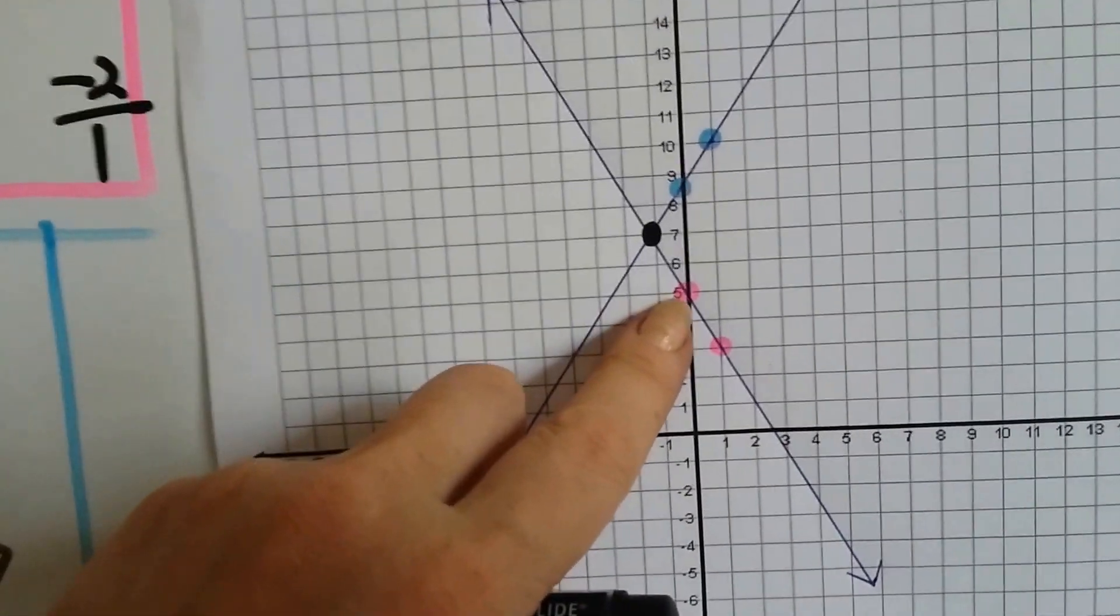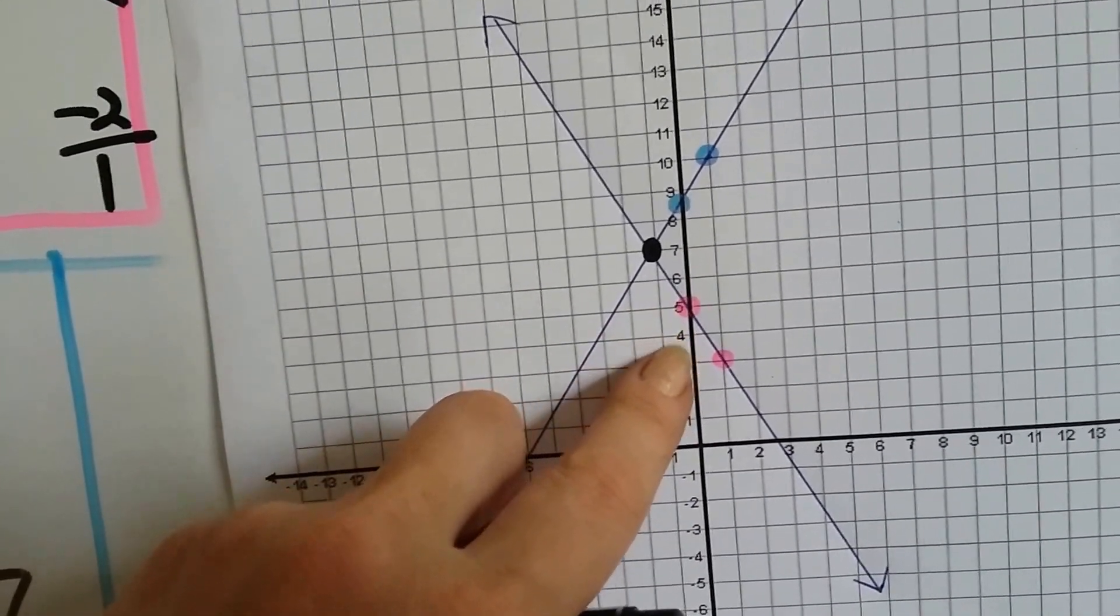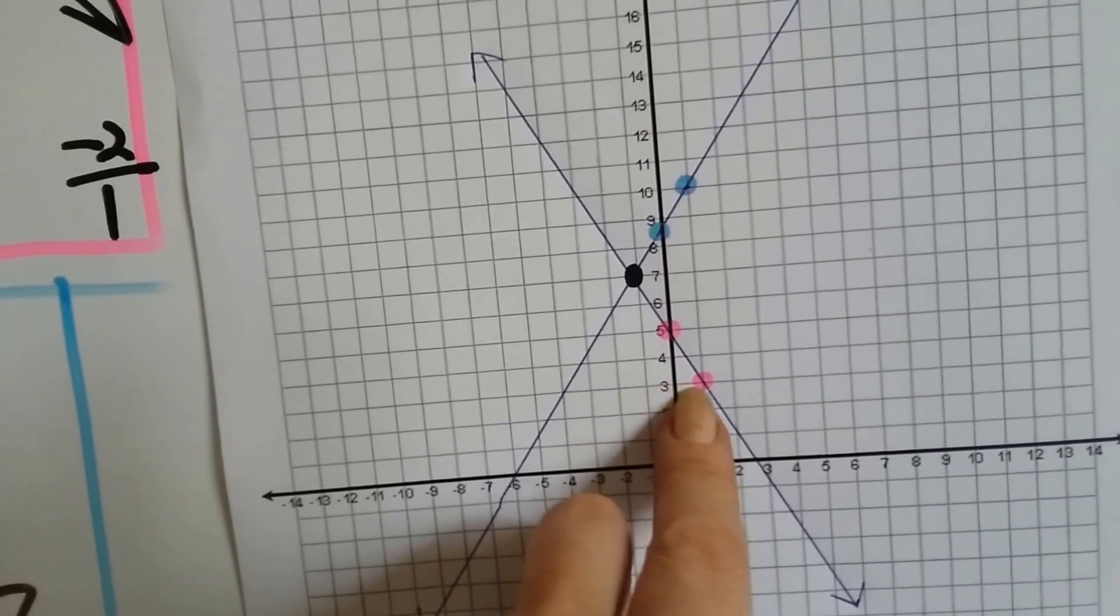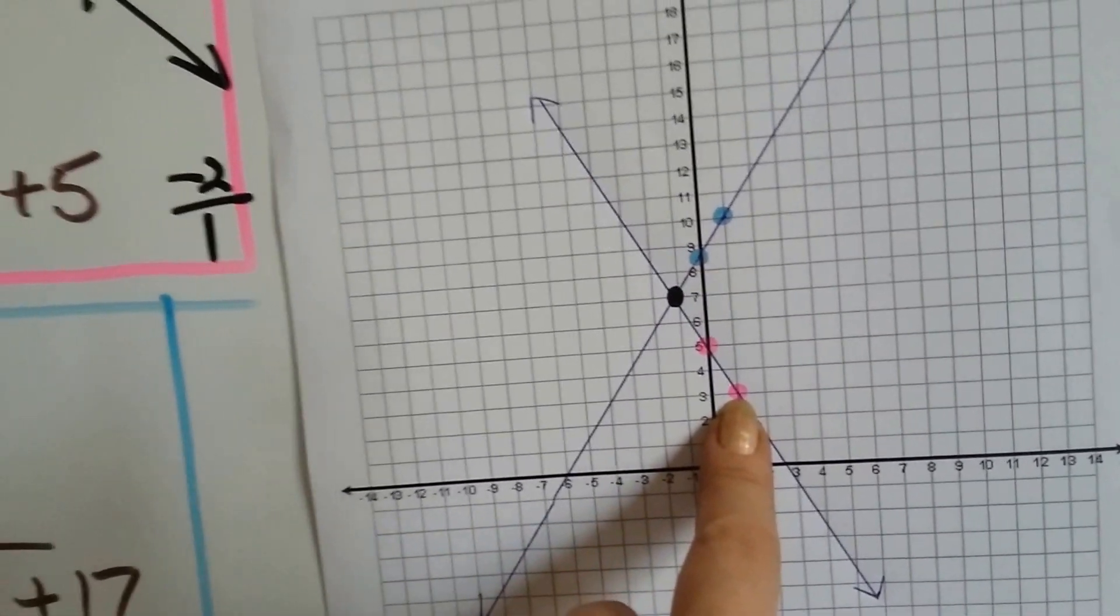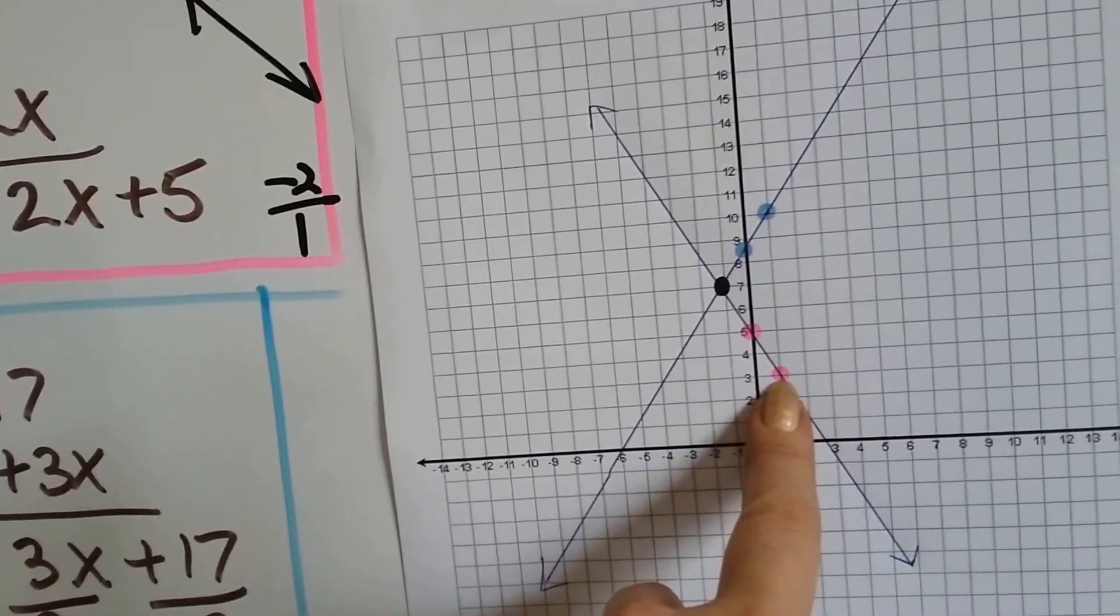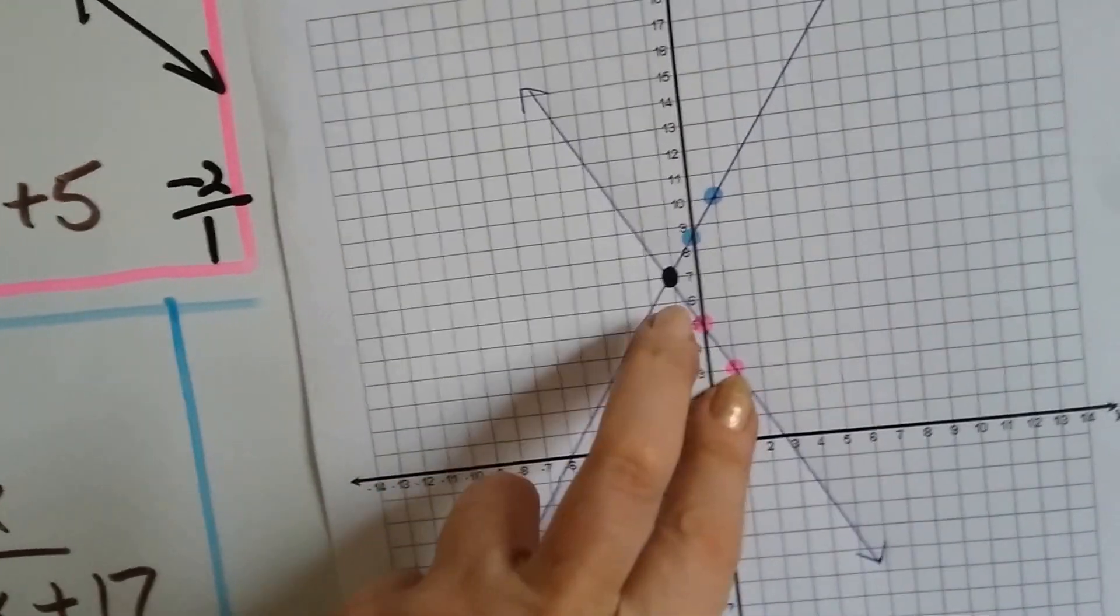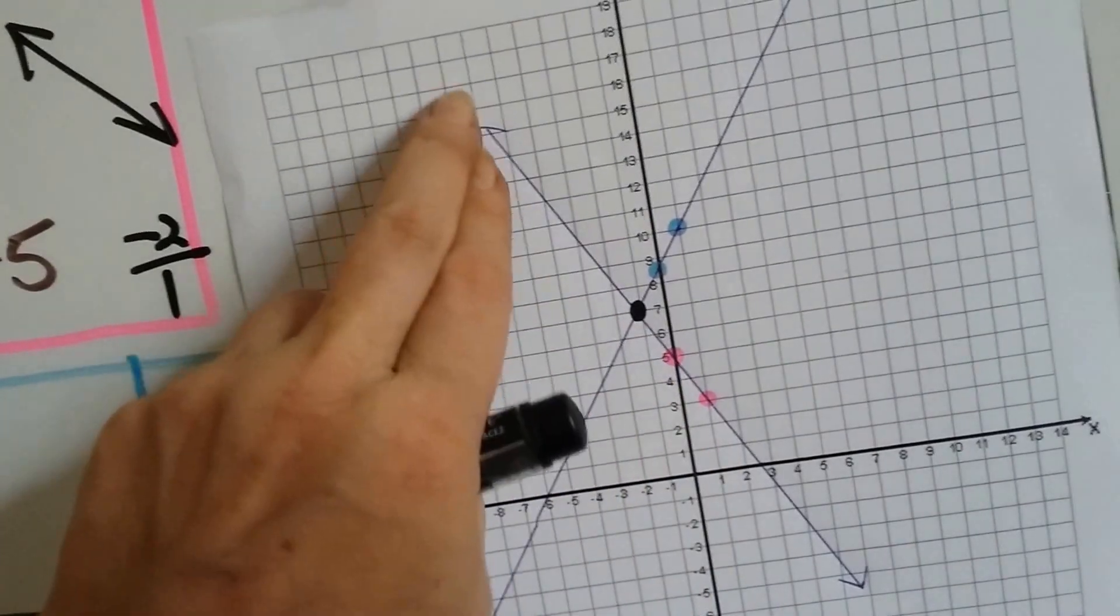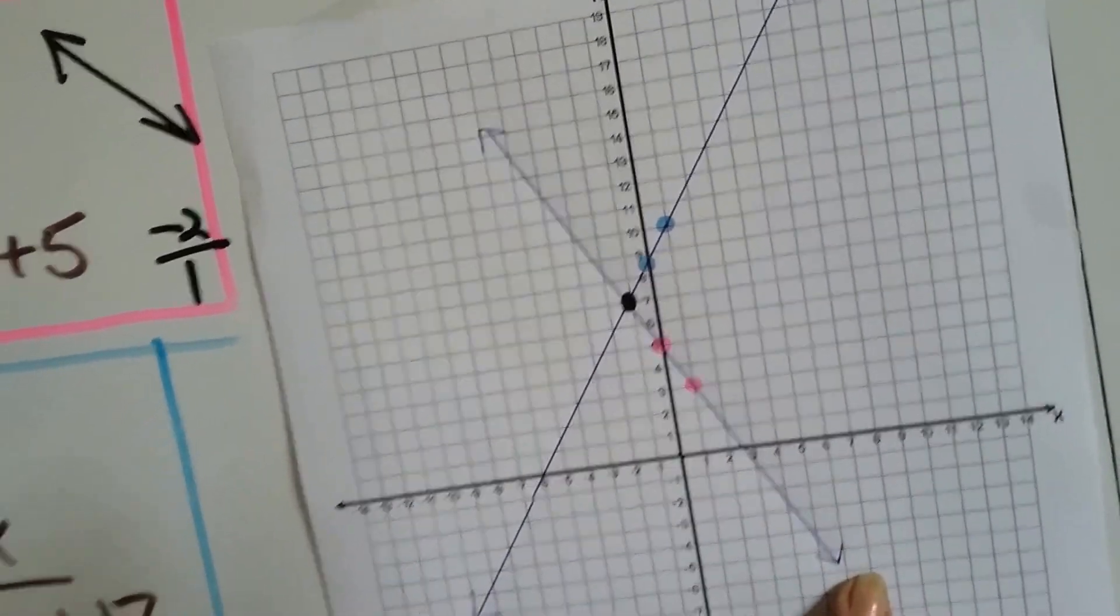So I was at 5, so I went down 1, 2, and my run went over 1, and I put my point right there. That's my slope, negative 2 over 1 for the rise over the run. So I got my two pink points and I drew my line for the pink line.